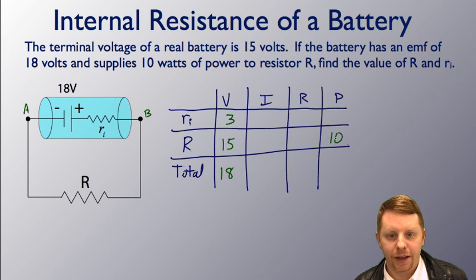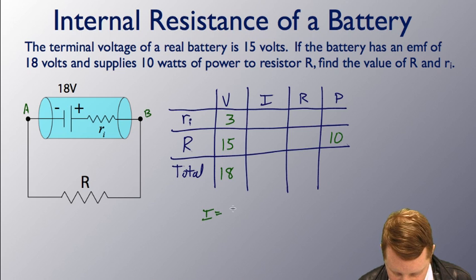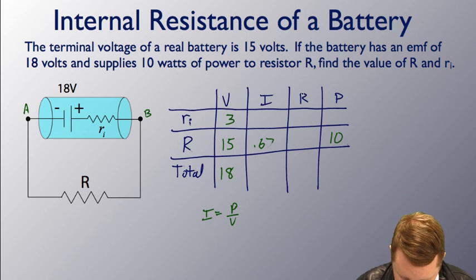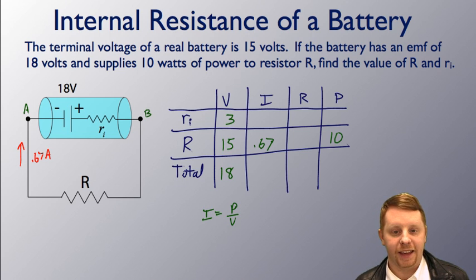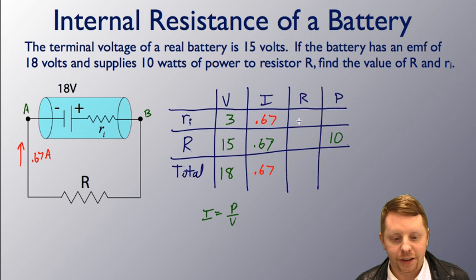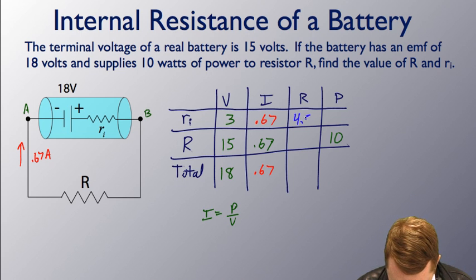Right away, anytime I know two things in a row, I can figure out the others. Power is V times I, so that means I must be power divided by voltage, which is going to be 10 watts over 15 ohms, or 0.67 amps. That means I must have 0.67 amps flowing through my circuit. Since it's a series circuit, we must have the same current everywhere in the circuit, 0.67. And now I can figure out the resistance, the internal resistance here. R equals V over I. That's going to be 3 over 0.67, or about 4.5 ohms.